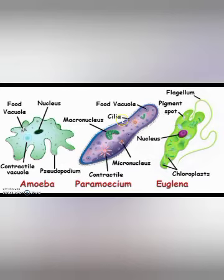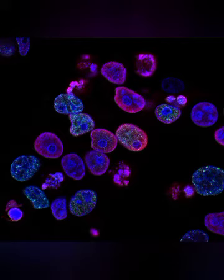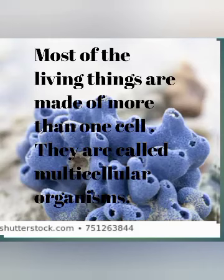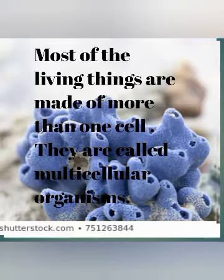Another thing we have to see is multicellular organisms. As you can see, so many cells are here — this can be called multicellular. The definition of multicellular is: most living things are made of more than one cell, and they are called multicellular organisms. Human beings and other animals are made of many cells, so they are called multicellular organisms.